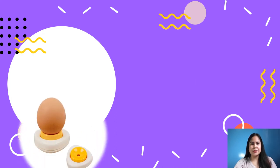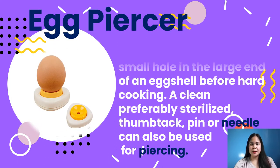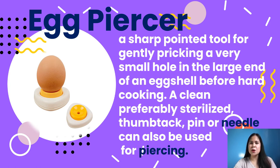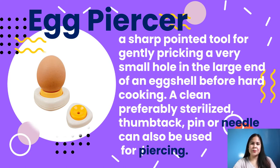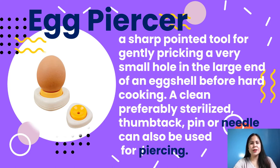Another tool is an egg piercer — a sharp-pointed tool for gently breaking a very small hole in the large end of an eggshell before hard cooking. A clean, preferably sterilized thumbtack, pin, or needle can also be used for piercing. An egg piercer pierces the air pocket of an eggshell with a small needle to keep the shell from cracking during hard boiling. Piercing may allow some air to escape and some water to enter the egg during cooking, which may make peeling easier.